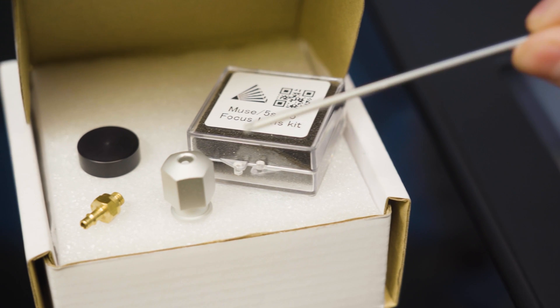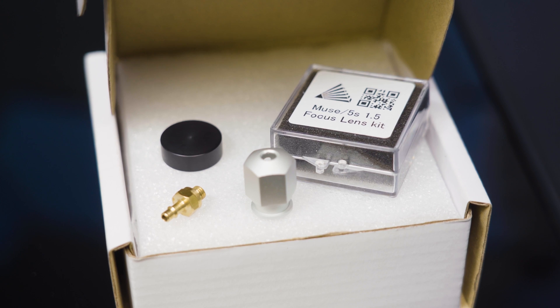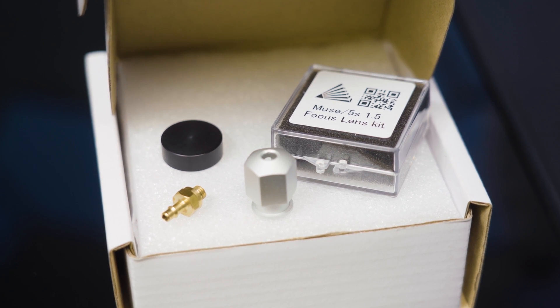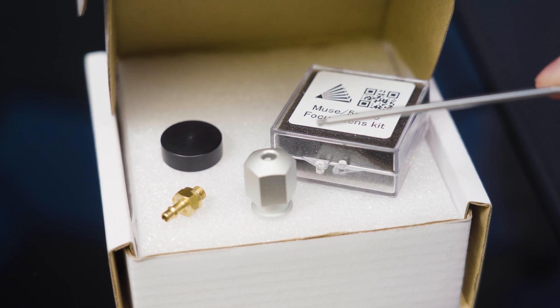Every lens kit will come with a cone, an air fitting, your focus billet, and of course it'll come with a lens. This lens kit is the one and a half inch. I'm going to show you how to replace this cone. This will be the same on the two and a half and the five inch.